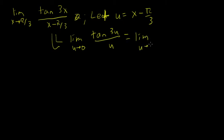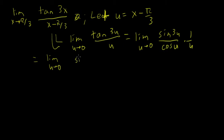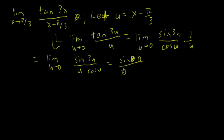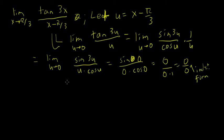Now, tangent of 3u is sine of 3u over cosine of 3u, so this becomes the limit as u tends to 0 of sine of 3u over u times cosine of 3u. If we check as u goes to 0, sine of 3u approaches 0 and cosine of 3u approaches 1, so we still end up with an indeterminate form — meaning we have still more algebra to do.